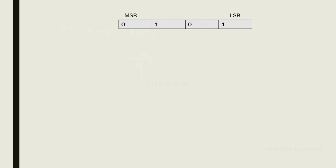Here we have a 4-bit number representing 5. In our previous session we saw how to find binary numbers. The first bit is called the Most Significant Bit (MSB) and the last bit is called the Least Significant Bit (LSB).